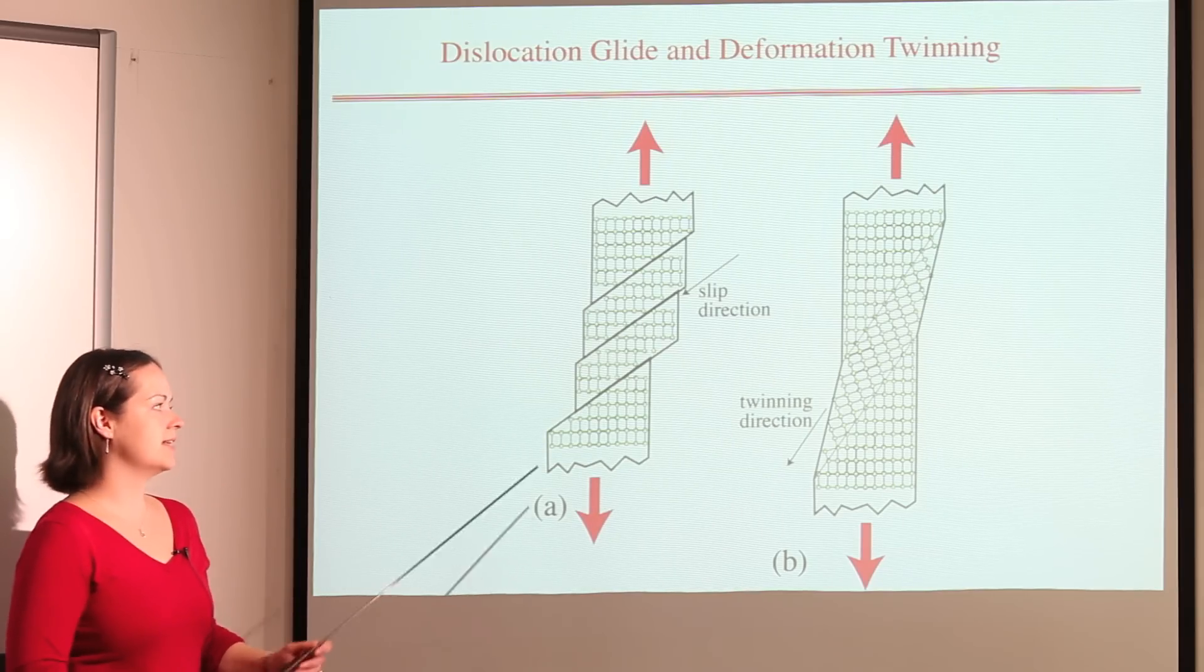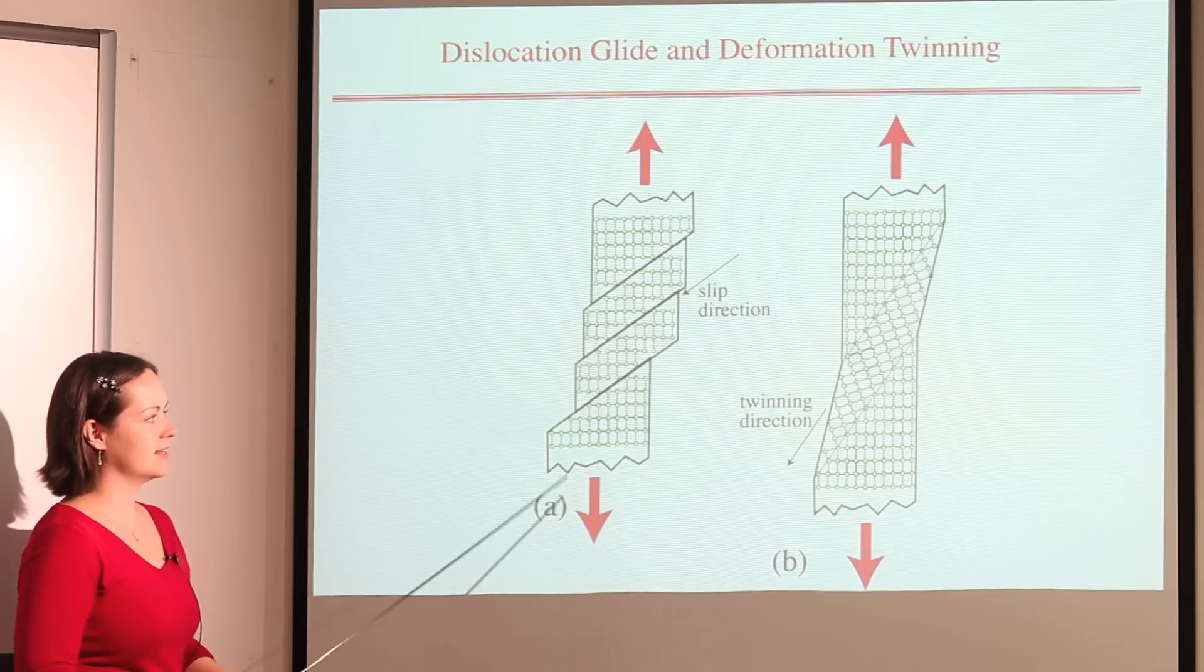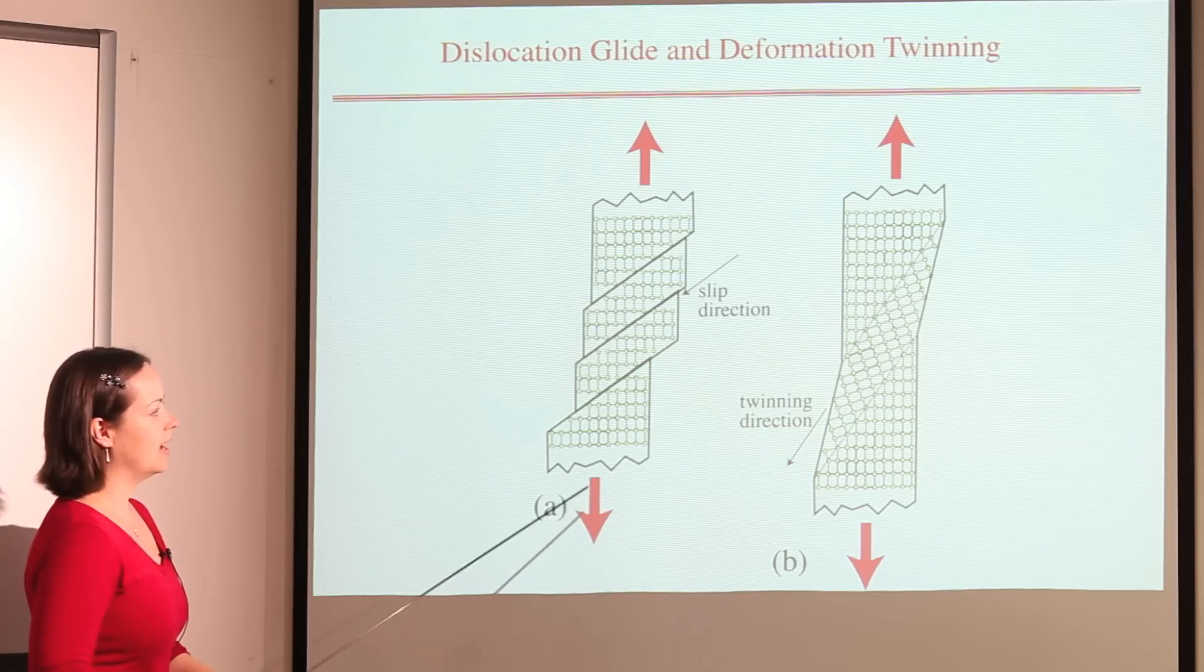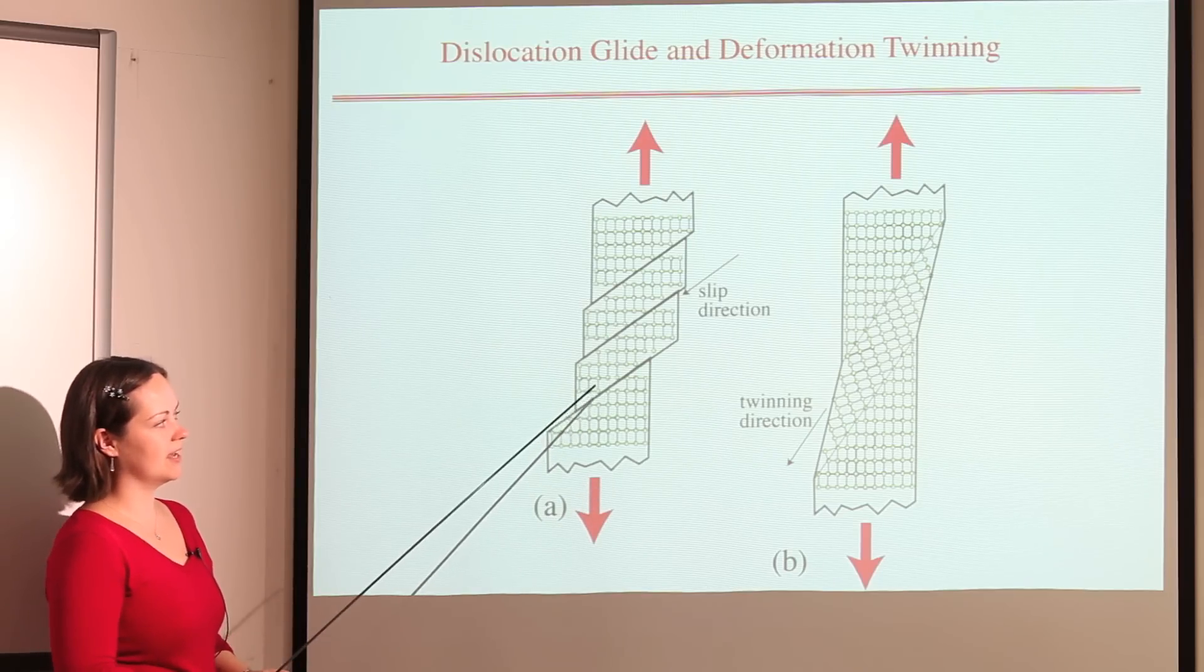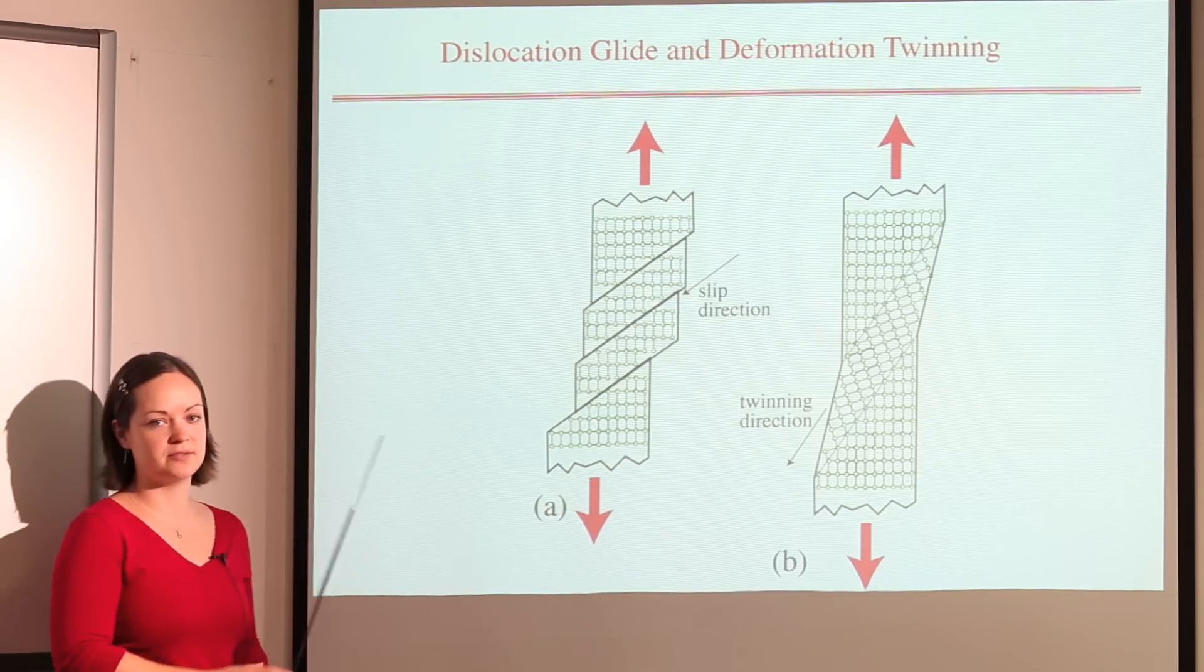In dislocation motion, that occurs by the movement of many dislocations along slip planes. This doesn't show individual dislocations, it just shows that the net effect is that we have different regions of the crystal displaced with respect to each other.